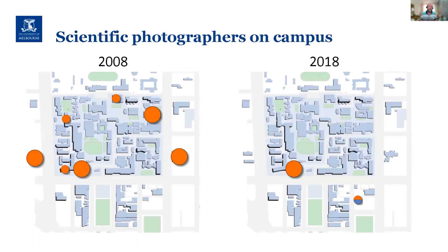Scientific photographers have got a lot of those bits of expertise already, and learning things like photogrammetry fits into our normal professional development. However, with various budgetary pressures on departments over the last two decades, we've seen a gradual reduction of technical support staff in academic departments across the university. This was accelerated by a massive restructure in 2014 that left only four photographers on campus, and today there are only three left.